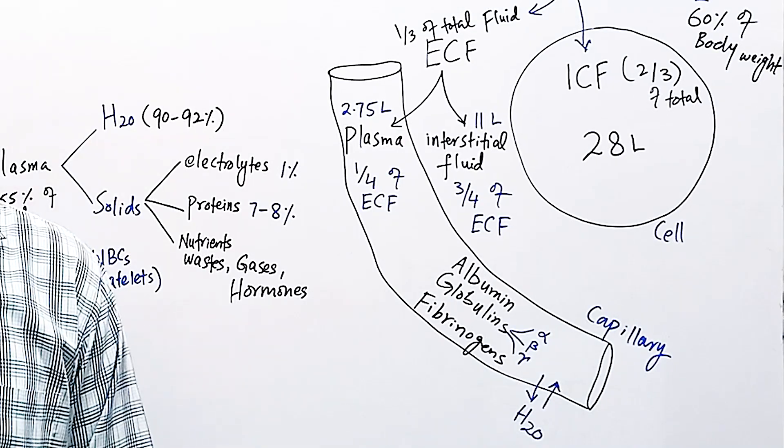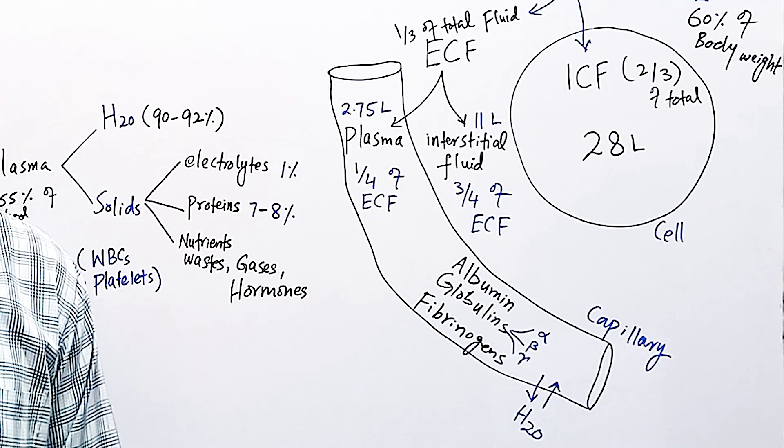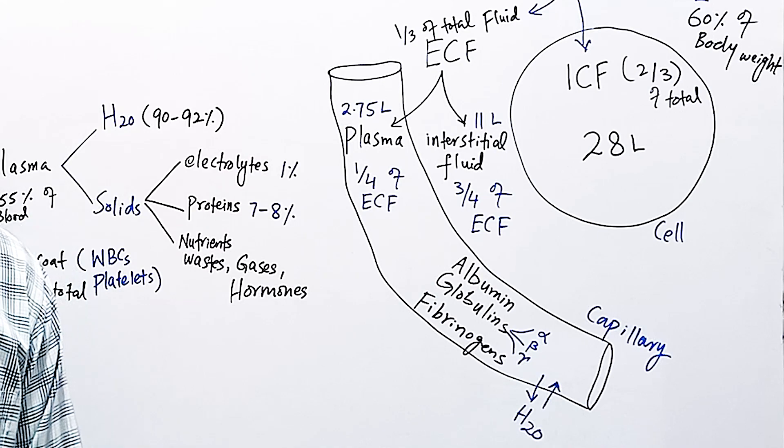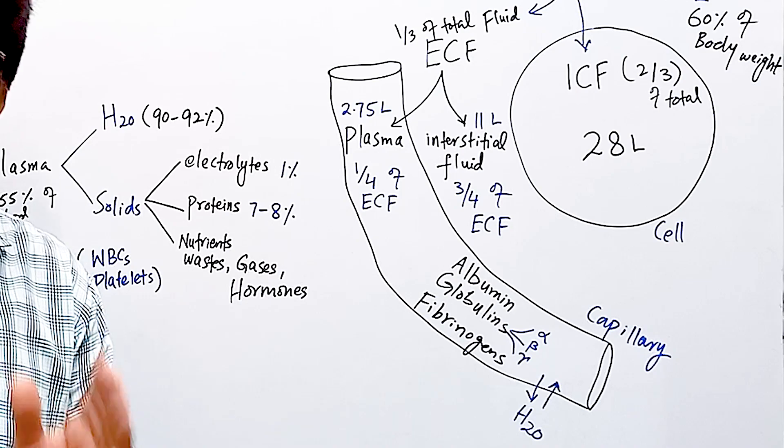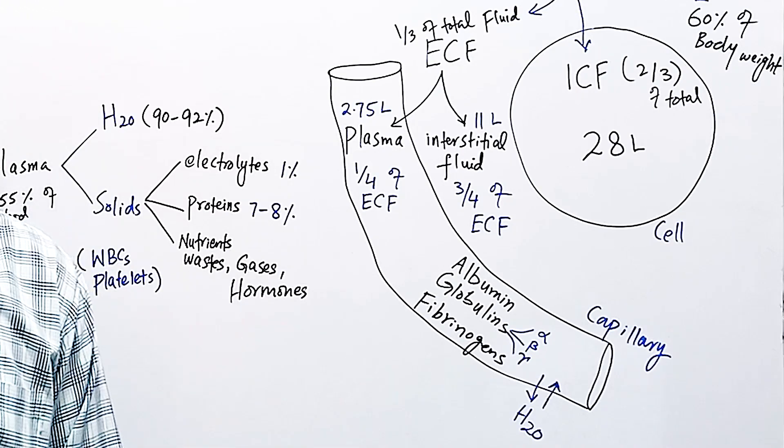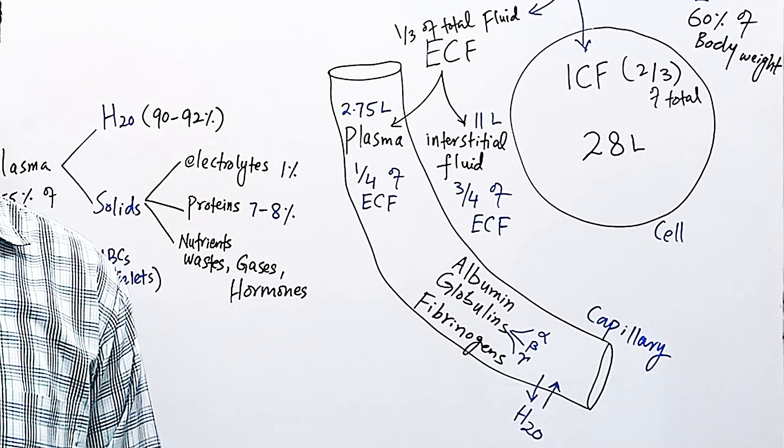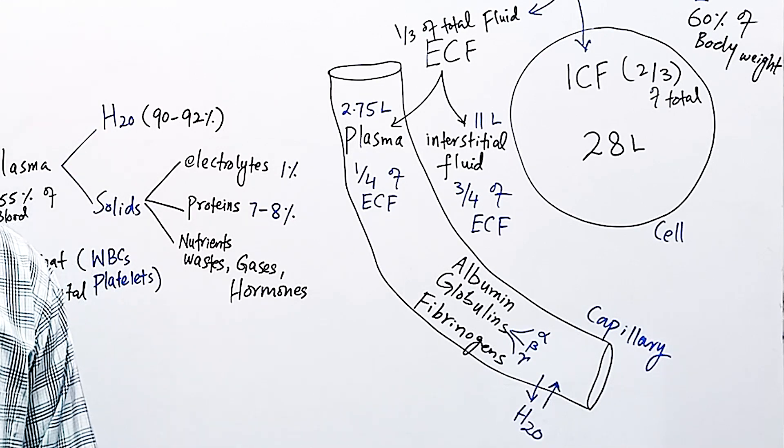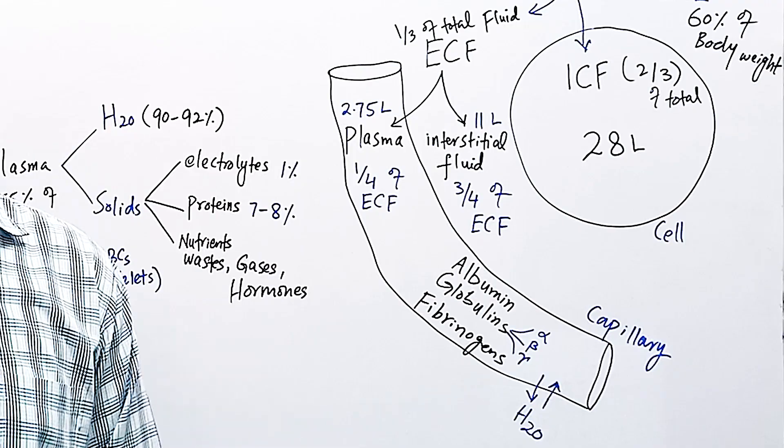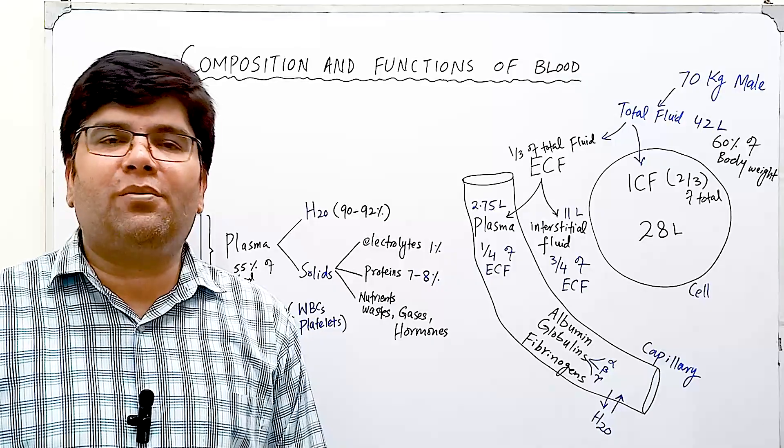Another important function is that plasma proteins are responsible for blood viscosity. The viscosity provided by plasma protein is 1.5 times that of water. The viscosity of total blood is four times that of water, but viscosity of plasma is 1.5 times that of water. This viscosity is responsible for increasing resistance to blood flow and is one of the factors that controls blood pressure.